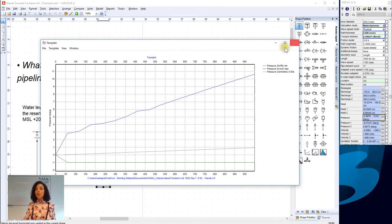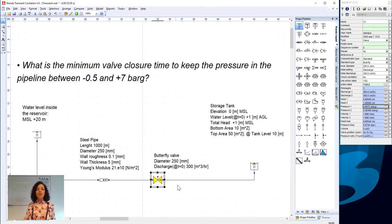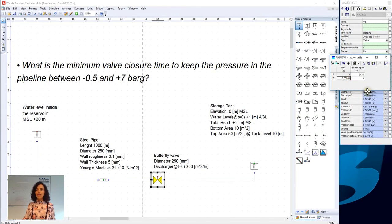Thus, we update the closure of the valve in the system. So, we go back to the action table again. And we increase the time of closure of the valve. By gradually closing the valve in the system, we decrease the pressure wave generated in the system.